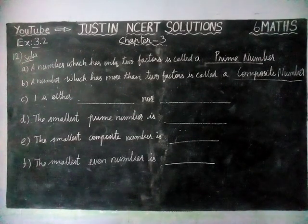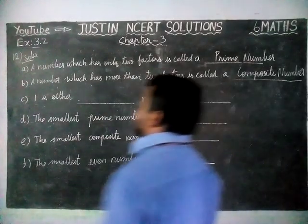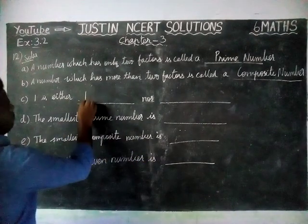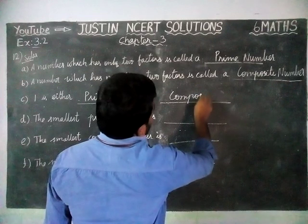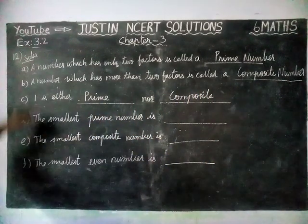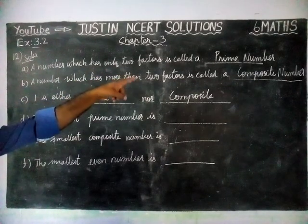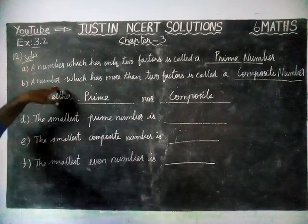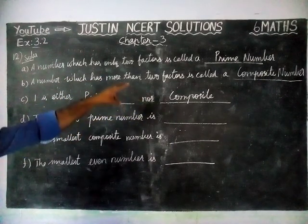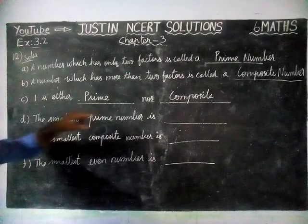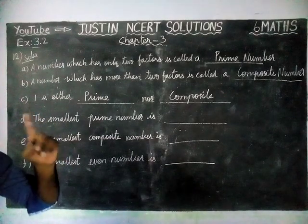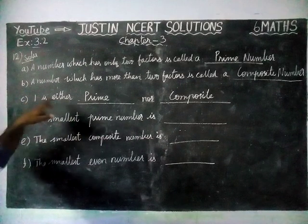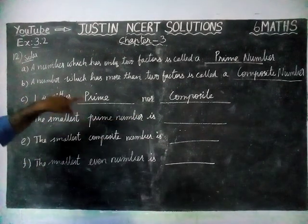Option C: 1 is either blank nor blank. We already discussed about the number 1. 1 is neither prime nor composite. Because a prime number has only two factors, and a composite number has more than two factors. But 1 has only one factor — which is 1 itself. That's why 1 is not a prime number and not a composite number, so it is neither prime nor composite.